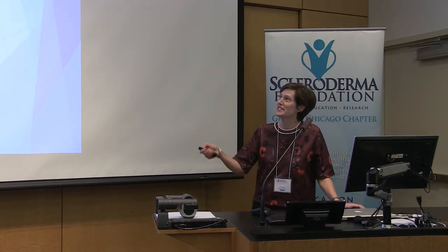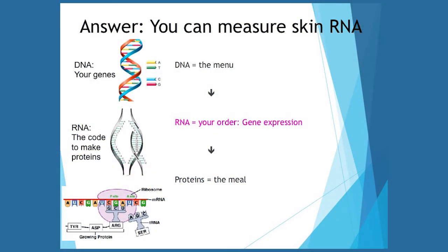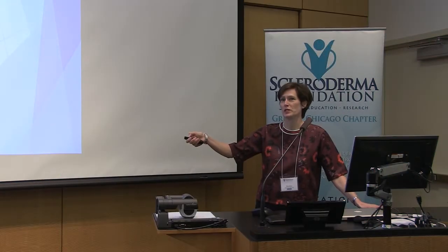I like to think of the DNA as the menu — all the different proteins your body can produce is the menu. The RNA is what your body orders: the proteins it needs to keep you healthy, that's the gene expression. And the proteins are what the body delivers — that's actually what's brought to your table. That's a way I think of it that helps keep it straight.